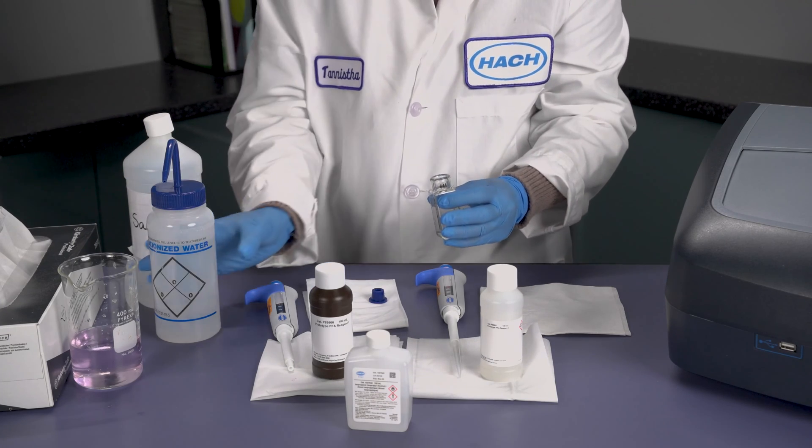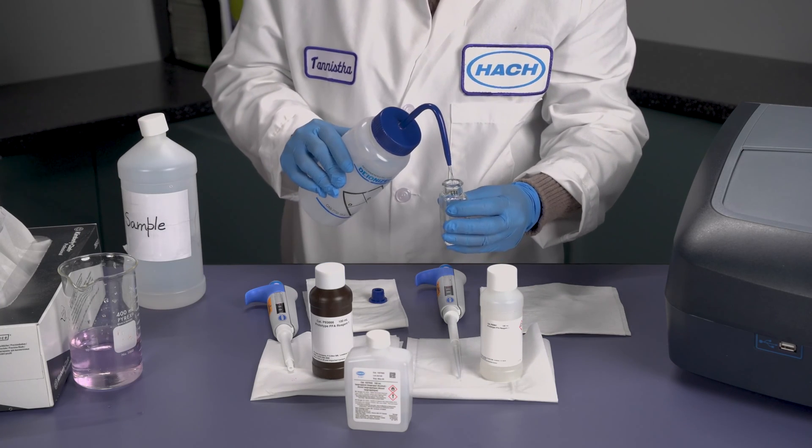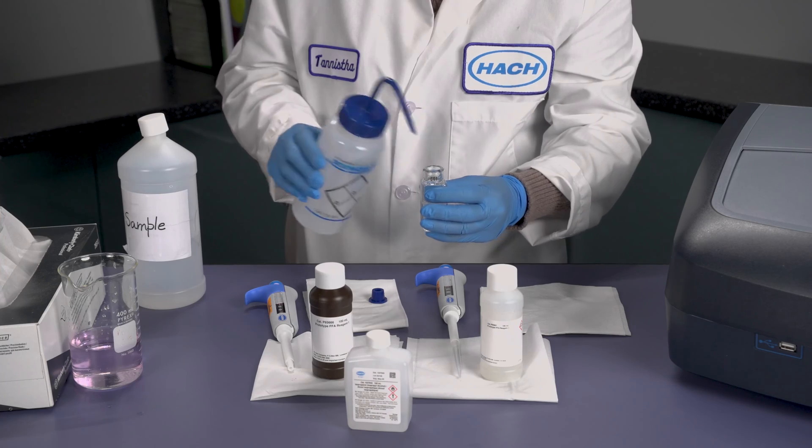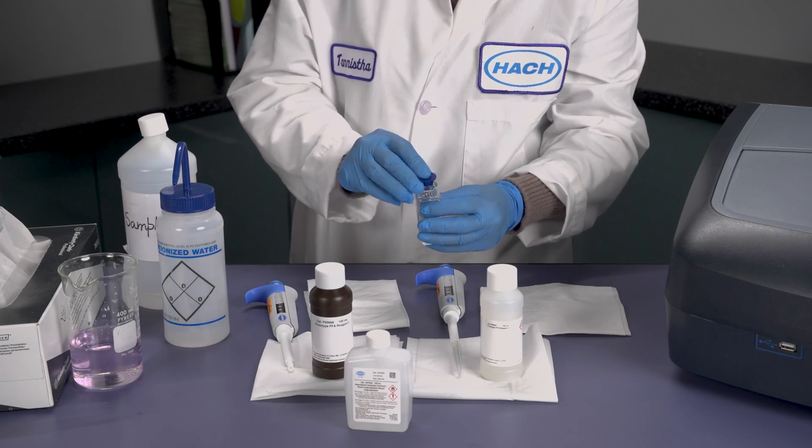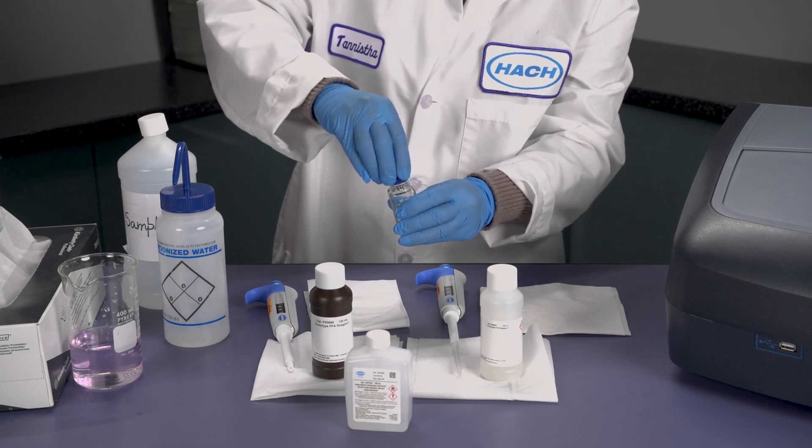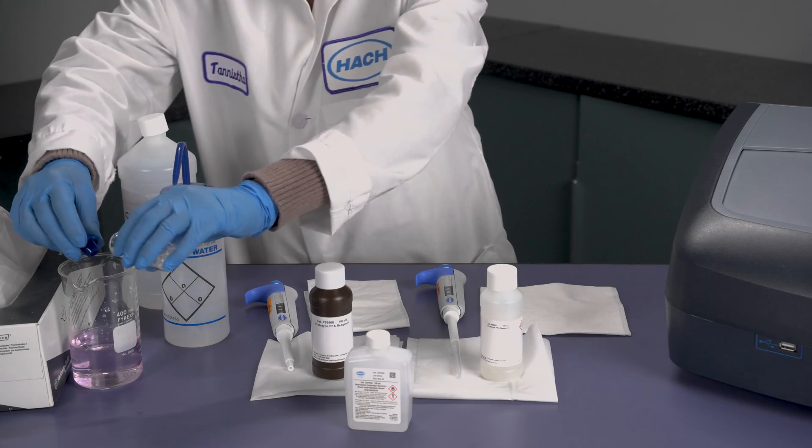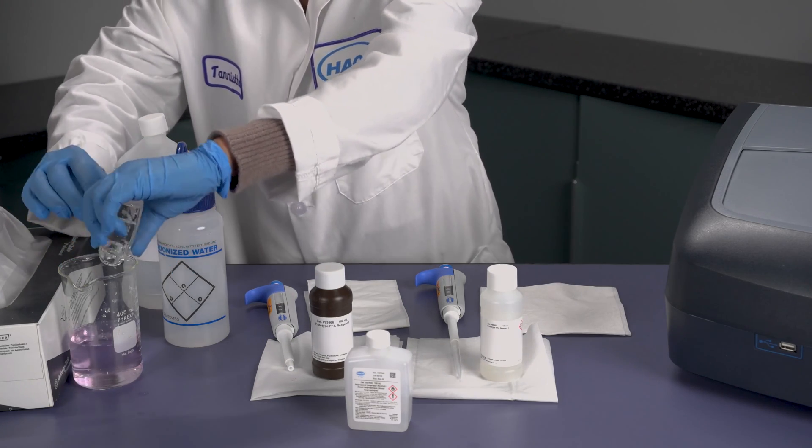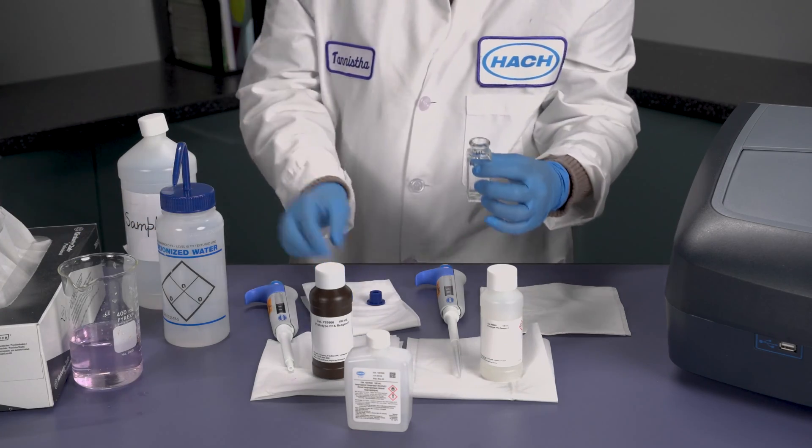Discard the isopropyl alcohol and rinse again with deionized water a minimum of four times. If this cleaning procedure is not done correctly, then accurate results at the very low end will be very difficult to obtain. Hach's research has shown that the cleaning of the sample cell is one of the most critical aspects in getting a good, accurate result for this method.